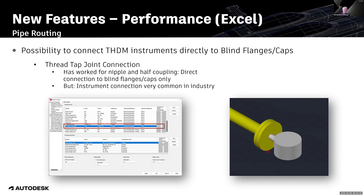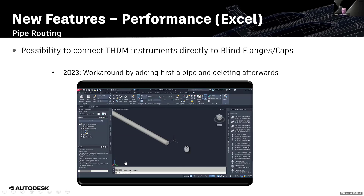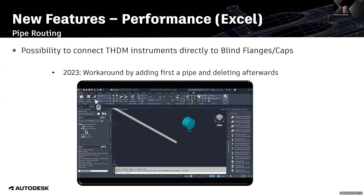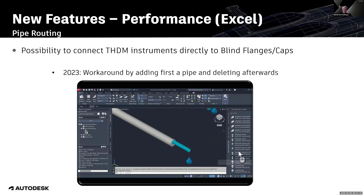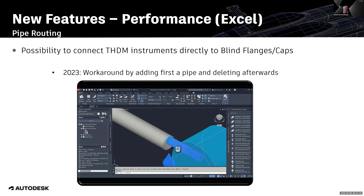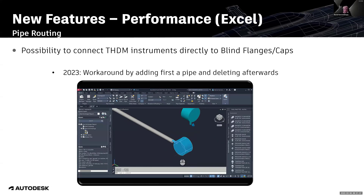But it was not possible to connect directly with an instrument — this has now been changed. To show the different behavior, here is a video. We have a piece of pipe with a cap at the end. This is a workaround that worked but was just a workaround to add a THDM instrument directly to a cap. You can see it won't align — you cannot really snap it. The workaround involved adding a piece of pipe to the cap, then selecting the THDM instrument and connecting it at the port between the pipe and the cap, and afterwards removing the extra piece of pipe. It worked, but it was just a workaround.